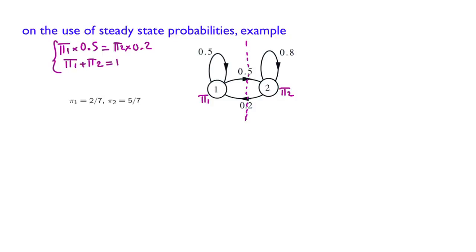And by solving this system of equations, you obtain the same thing as what we obtained before, which is the steady-state probabilities of state 1 and of state 2.